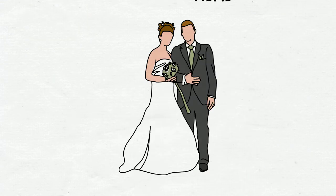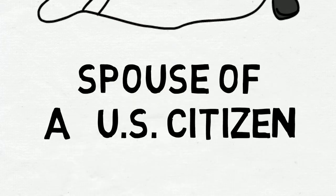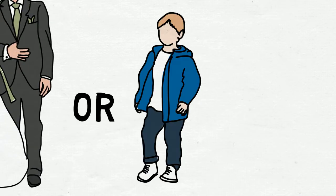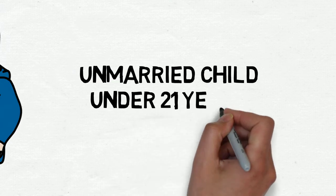In this case, you need to be either the spouse of a U.S. citizen or an unmarried child under 21 years of age of a U.S. citizen.